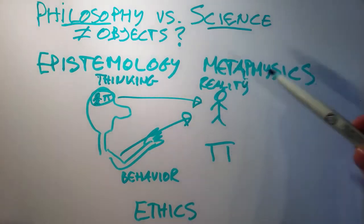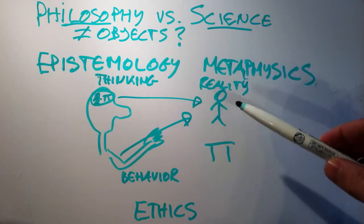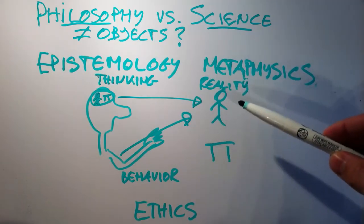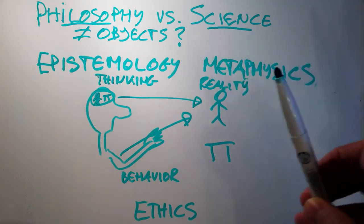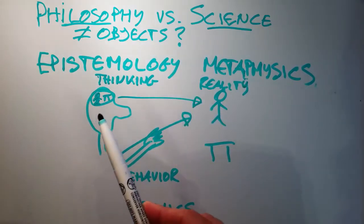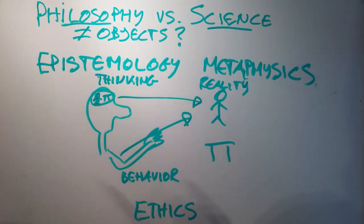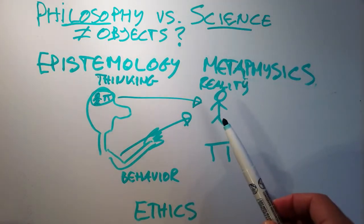Metaphysics was about the ultimate being of things, what are people really and what are tables really. Epistemology is about acquiring knowledge about this reality, and ethics is about the question how should we behave towards people.